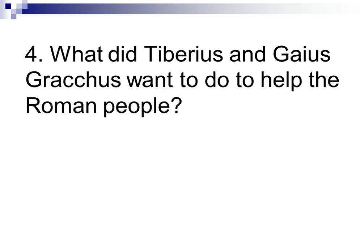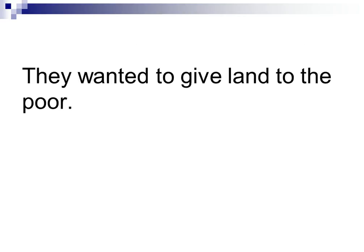Number 4: What did Tiberius and Gaius Gracchus want to do to help the Roman people? They wanted to give land to the poor. The other senators did not agree, and both of them were killed for their actions.